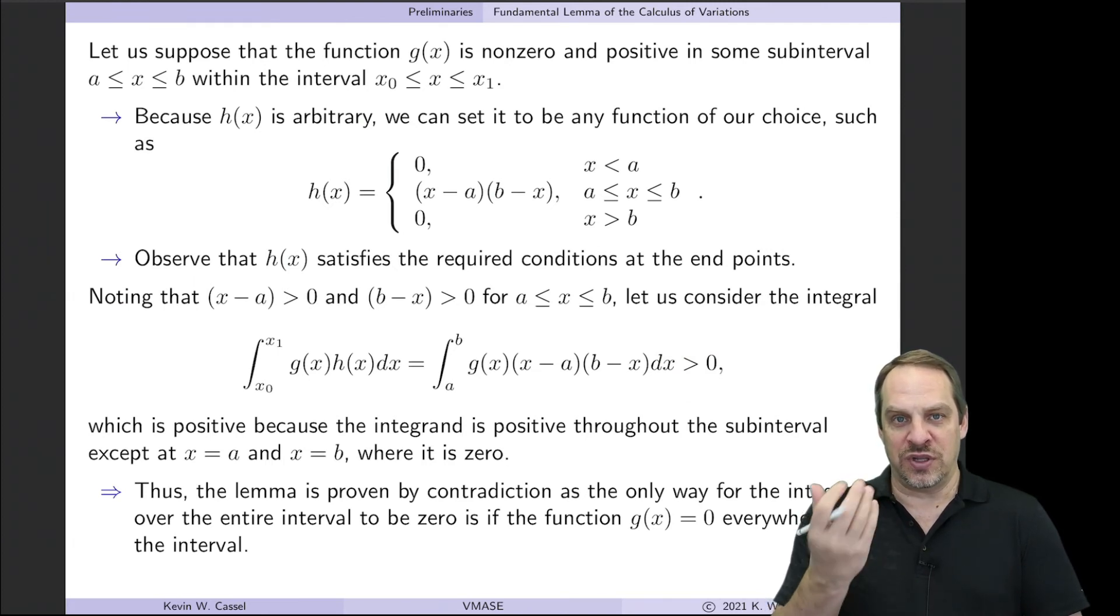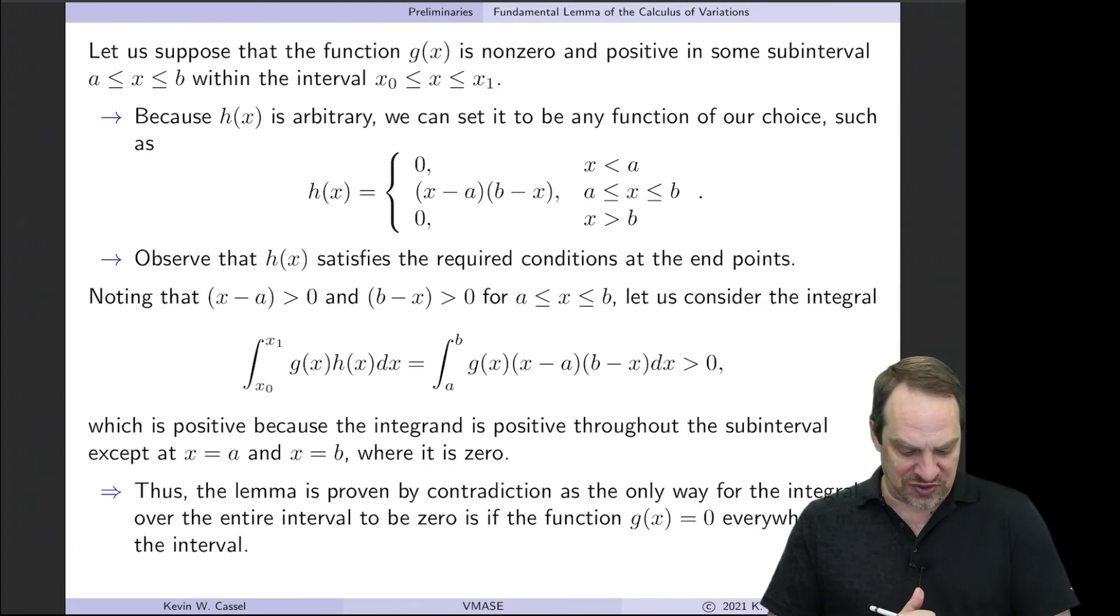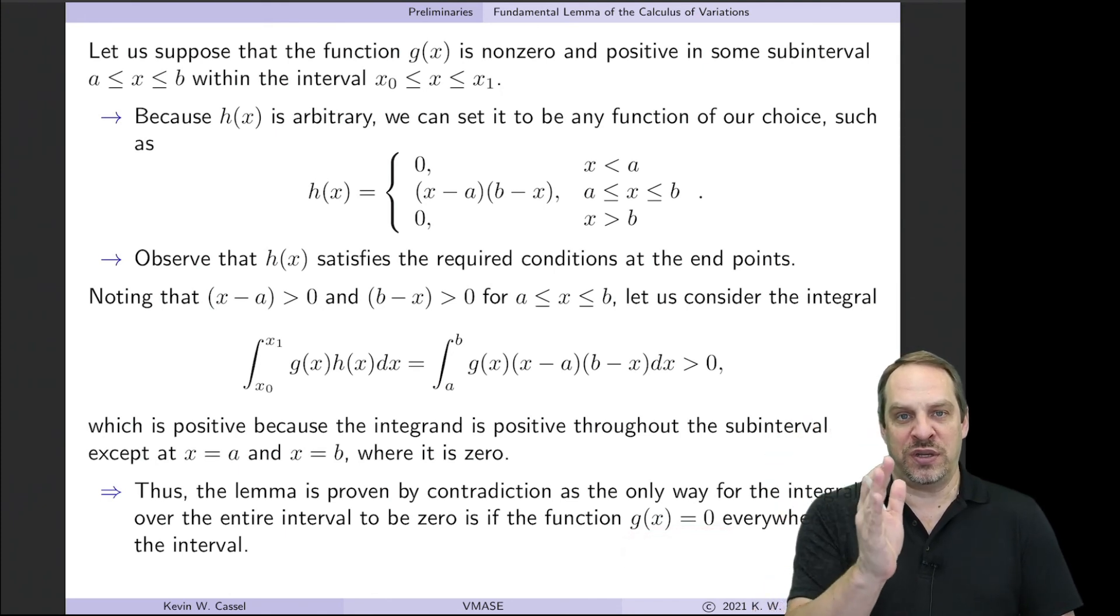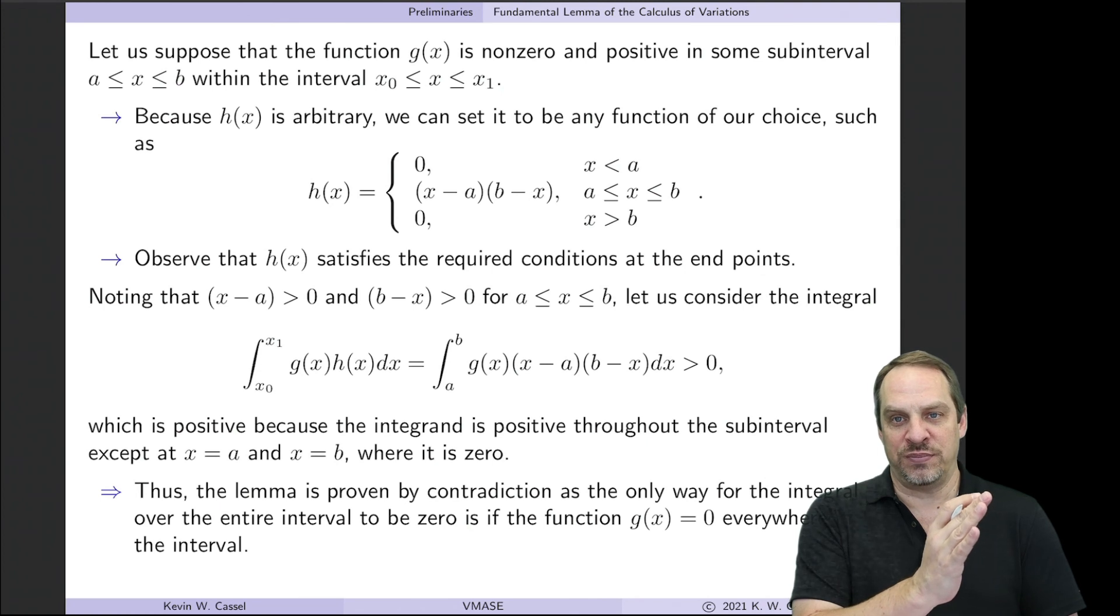Now that violates the lemma that we just stated on the previous slide. We've shown how assuming that g being non-zero and positive does not satisfy, and in fact cannot satisfy, this lemma. So the only way to satisfy this lemma is if g is indeed equal to 0 at every point x between x0 and x1.